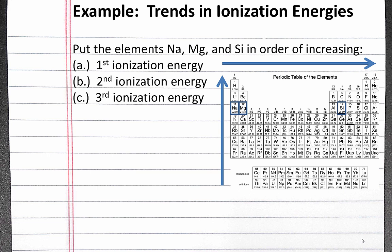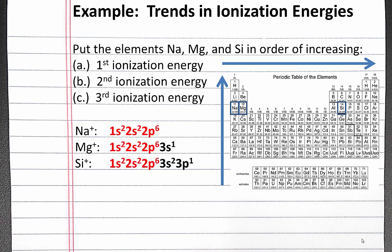For the second ionization energy, we have to write the electron configurations for the ions that we're removing an electron from. After we've removed an electron, we have Na⁺, Mg⁺, and Si⁺. For the second ionization energy, we're going to be removing a core electron from Na⁺ and valence electrons from Mg⁺ and Si⁺. It requires a lot more energy to remove a core electron than a valence electron. So our order of increasing second ionization energy is magnesium, silicon, and then sodium, because we're removing a core electron from sodium.